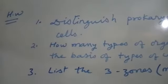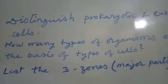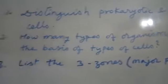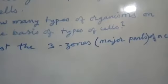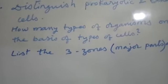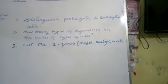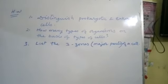Now here are your homework questions. First: what are the differences between prokaryotic and eukaryotic cells? Second: how many types of organisms are there on the basis of types of cells, and who are they? Third: list the three zones or major parts of a cell. From the next day, we will discuss the different parts of the cell like cell membrane and nucleus one by one, and what their functions are.